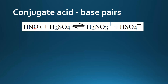Here's another example: we have HNO₃ (nitric acid) and H₂SO₄ (sulfuric acid). They are both acids, however in this reaction one of them will act as a Brønsted-Lowry acid and the other as a Brønsted-Lowry base. Looking at the right side of the equation, H₂SO₄ has donated its proton to HNO₃, so H₂SO₄ is acting as a Brønsted-Lowry acid and HNO₃ is acting as a Brønsted-Lowry base. In the reverse reaction, H₂NO₃⁺ is donating a proton to HSO₄⁻. The conjugate acid-base pairs are HNO₃ and H₂NO₃⁺, and H₂SO₄ and HSO₄⁻.